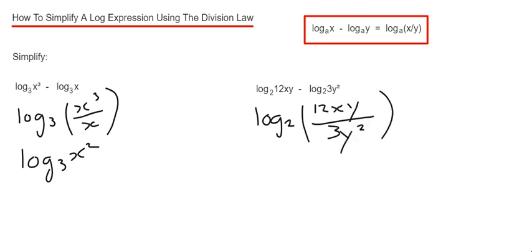Now we just need to simplify it. 12 divided by 3 is 4. We've got no x to simplify, and y divided by y squared would be y to the power minus 1.